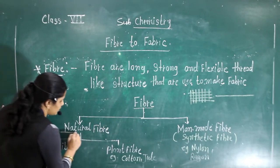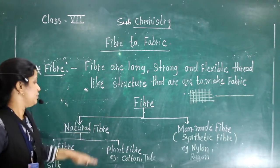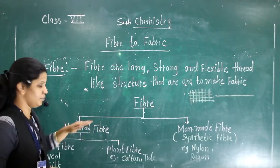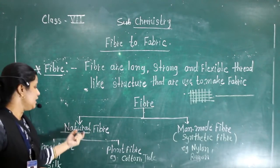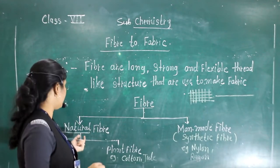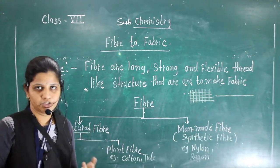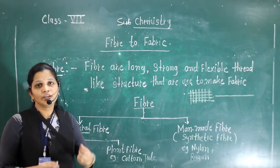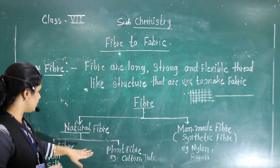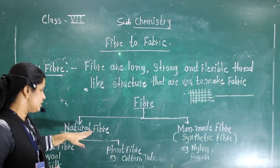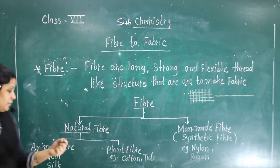Now we will see first about the natural fiber. Here the word is written, it is called natural fiber. Those fibers we are making naturally are known as natural fibers. Now naturally, how we are making the fibers? There are natural fibers which we are making from animal fiber and plant fiber.